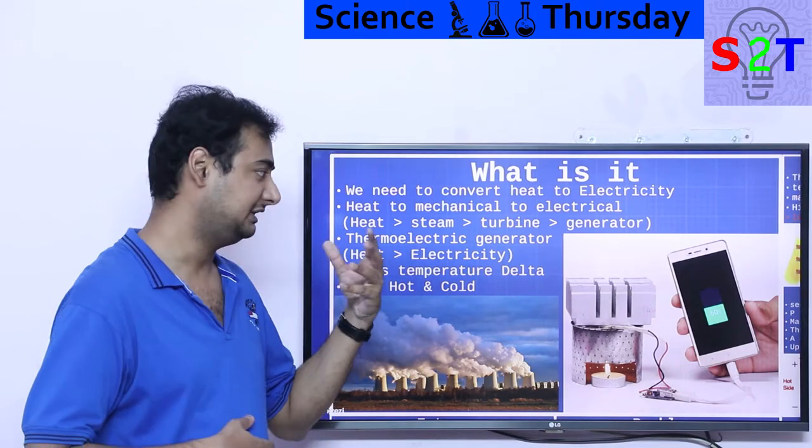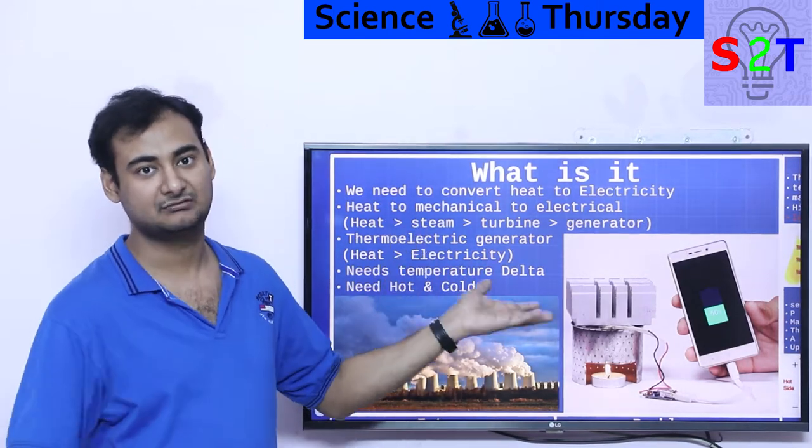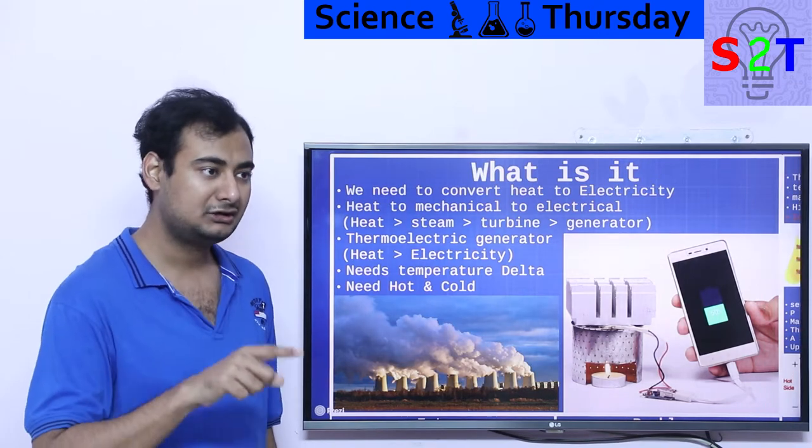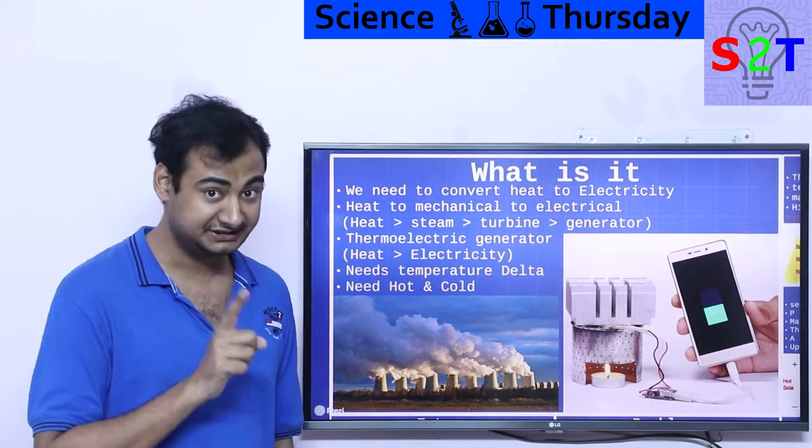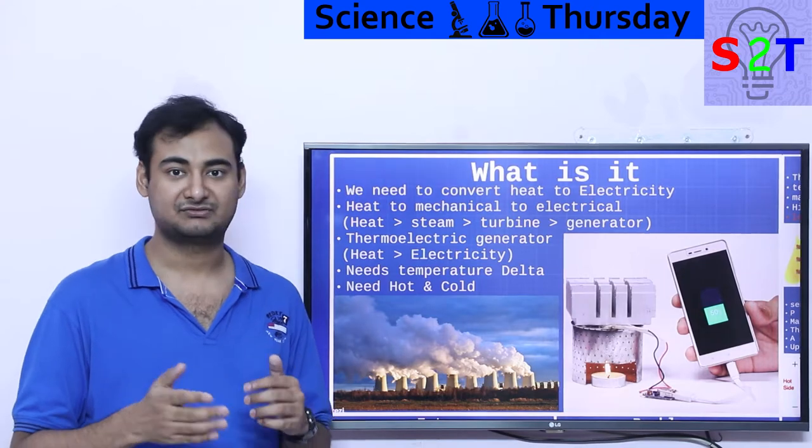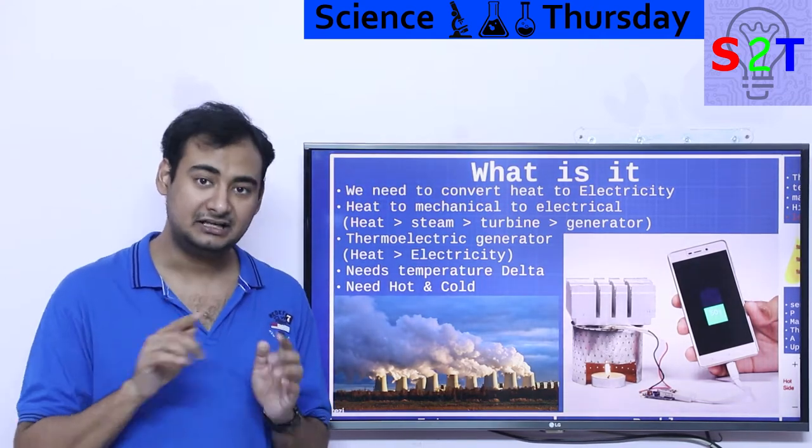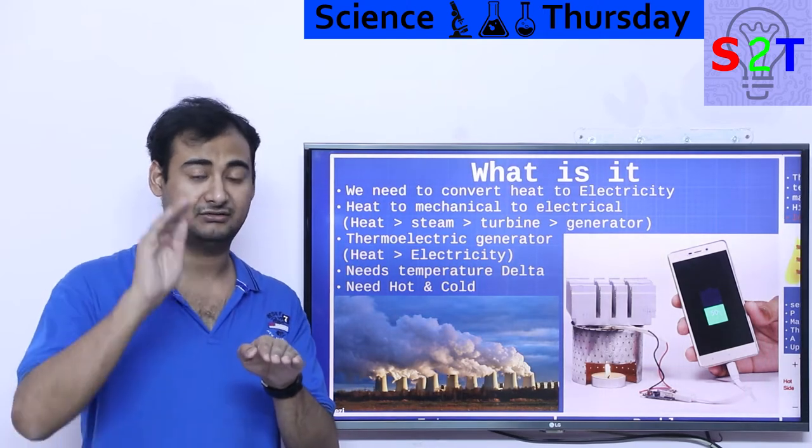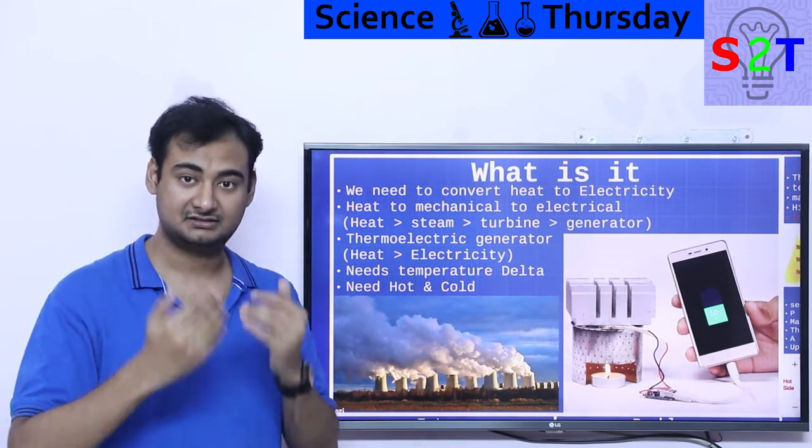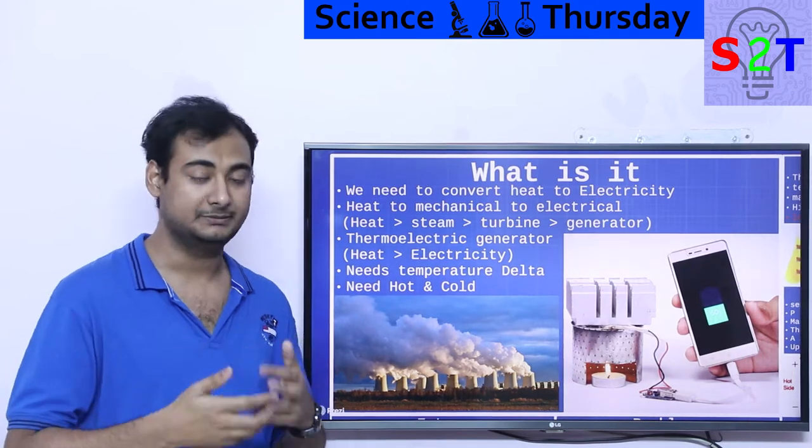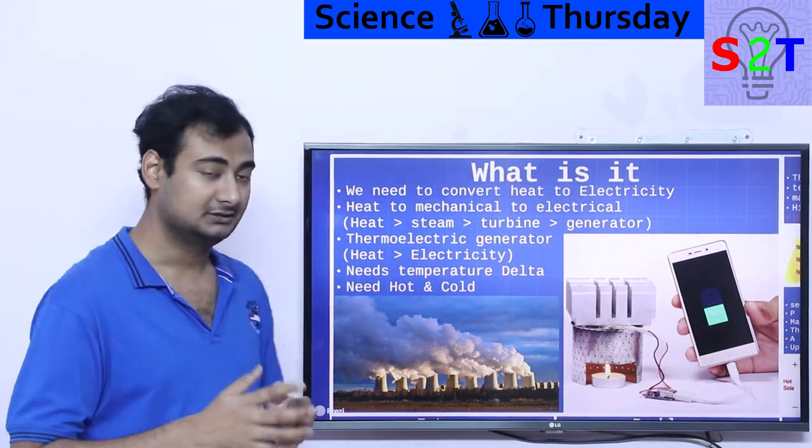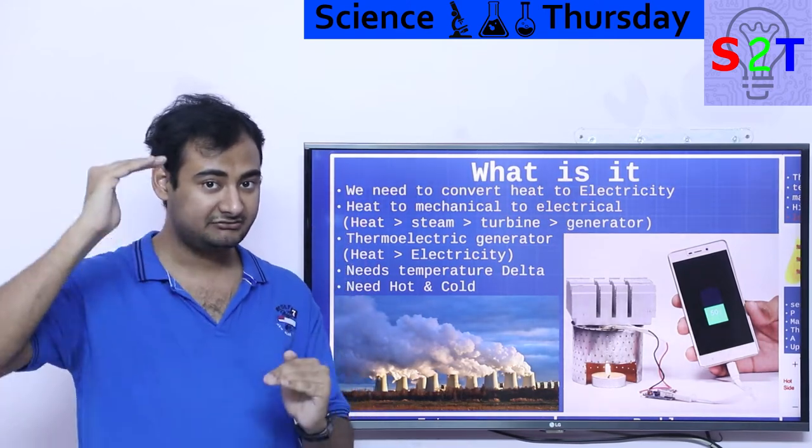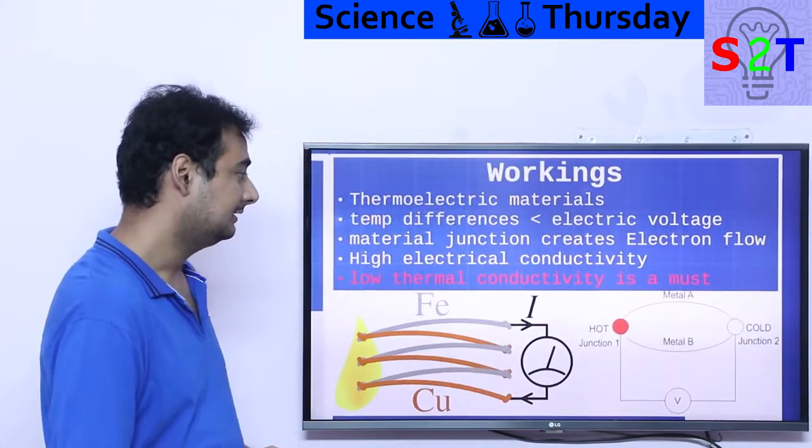And it requires a temperature delta. This is a very critical aspect. Many times people are like, if we can use a candle, why not just put them in a desert? The side effect is it needs hot and cold sides, both of them. It needs delta. It doesn't need in terms of 100 degrees, it needs a delta of 100 degrees. So you can literally have a cold side which is 100 degrees Celsius. However, the hot side could be 200 degrees Celsius. This system will still work, depending on the semiconductor design.